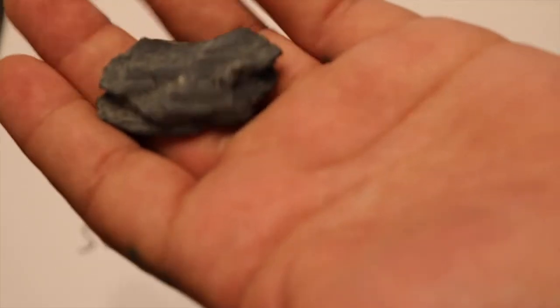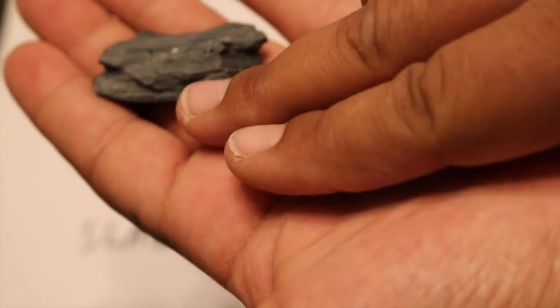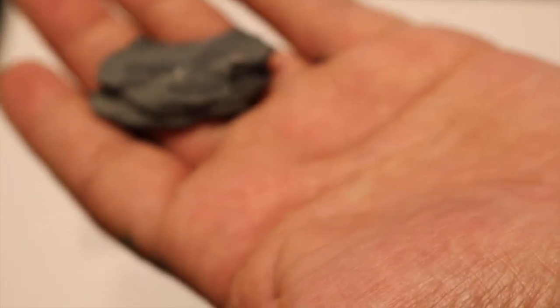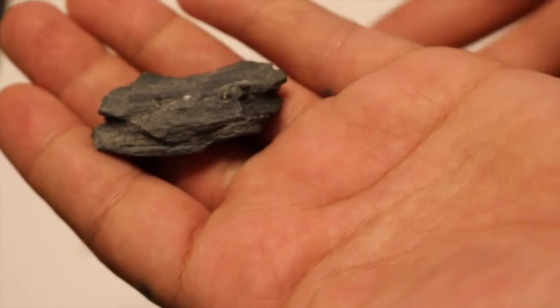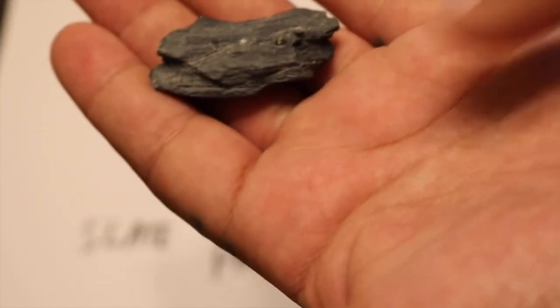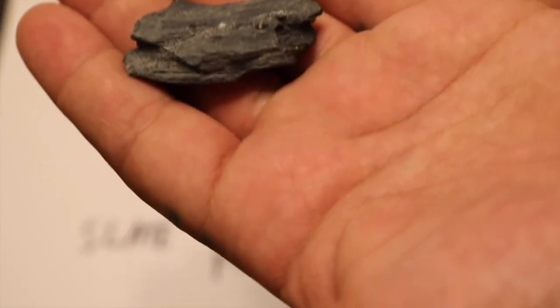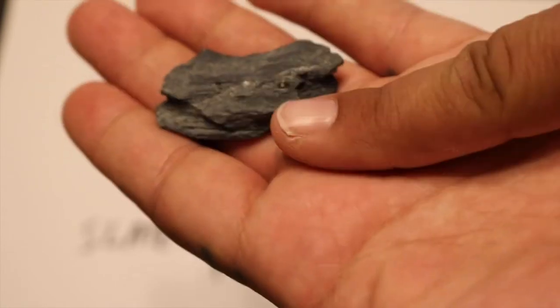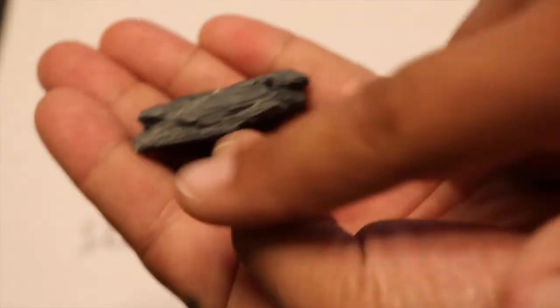When shale or mudstone undergo metamorphism, these layers will form that indicate the protolith of the rock, but they also indicate certain conditions under which this metamorphic rock had formed. We call this layering, especially in low grade metamorphic rocks, foliation. Foliation is the alignment of platy minerals within a rock. Slate has a distinct type of foliation called slaty cleavage. You can see it right here.